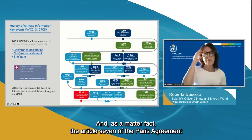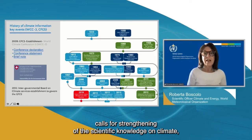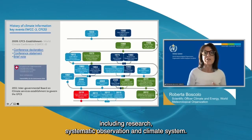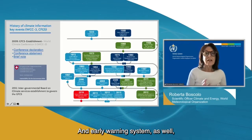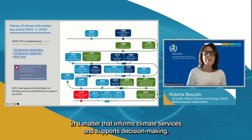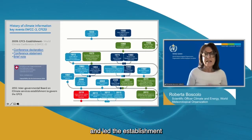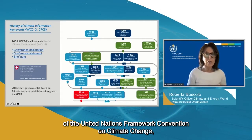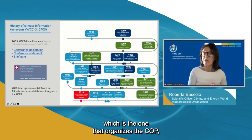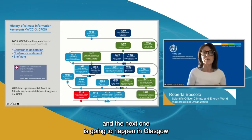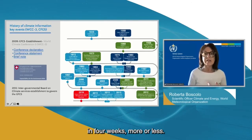Even though the IPCC produced its first assessment report in 1990, assessing the risks posed by climate change, institutional capacity to respond to such risks is still not fully in place, particularly at the regional and national scale. Article 7 of the Paris Agreement calls for strengthening scientific knowledge on climate, including research, systematic observation, and early warning systems, to inform climate services and support decision making. The second World Climate Conference was held in 1990, leading to the establishment of the UN Framework Convention on Climate Change, which organizes the COP.